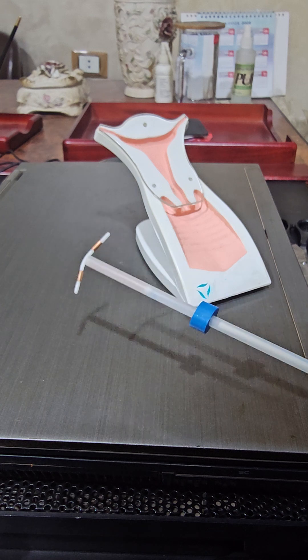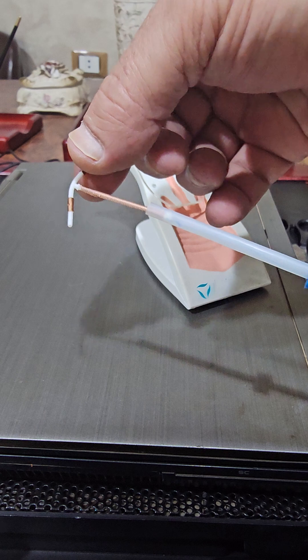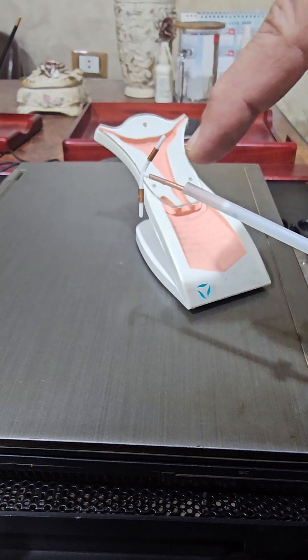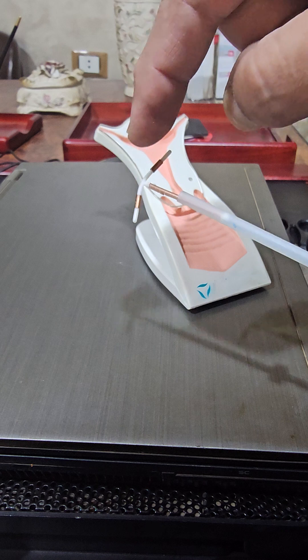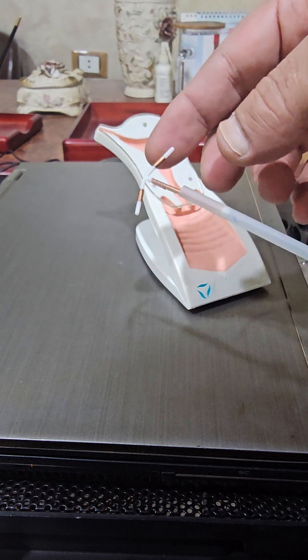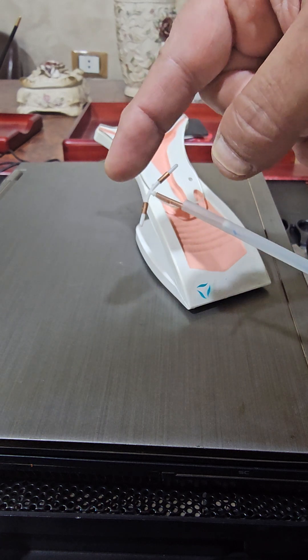Okay, we are going to use the withdrawal technique. First, this is the copper T, two transverse arms and one vertical arm. As you see, the copper covering the two arms and the vertical arm. 360 means the surface area of copper in square millimeters.